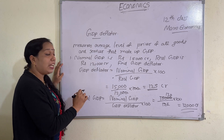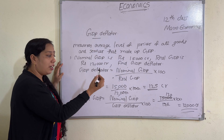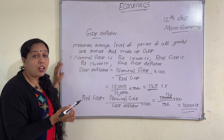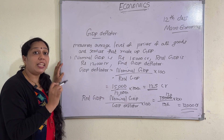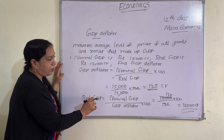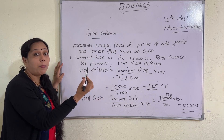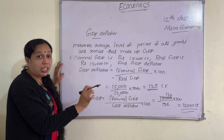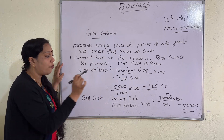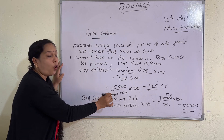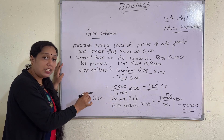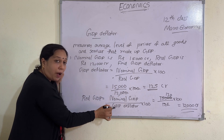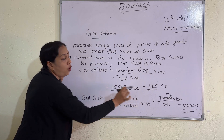Next is real GDP. Suppose they give you nominal GDP and the GDP deflator and ask you to find real GDP. The formula for real GDP is also: nominal GDP divided by GDP deflator, multiplied by 100. Always remember, the first term in the numerator is nominal GDP.